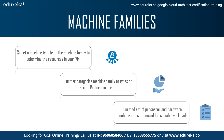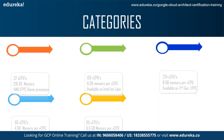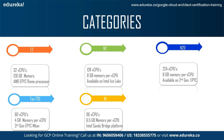When we talk about machine instances, we first select a machine type from the instance family to determine the resources in the VM. We further categorize the machine family into types based on the price-to-performance ratio. And finally, the curated set of processor and hardware configurations is optimized for the specific workload. Let's now talk about the different categories.